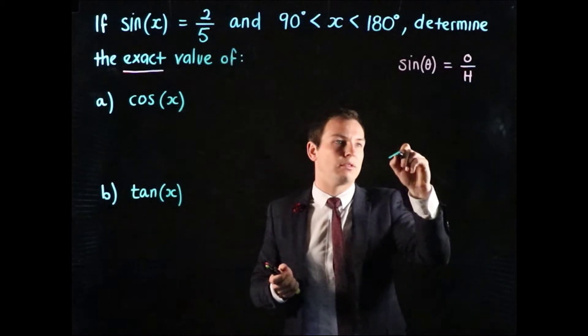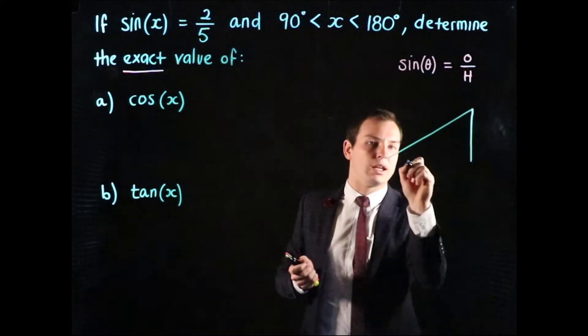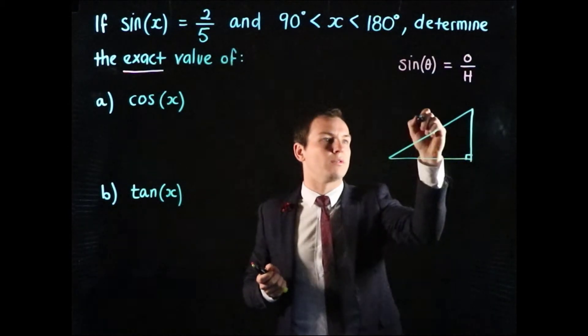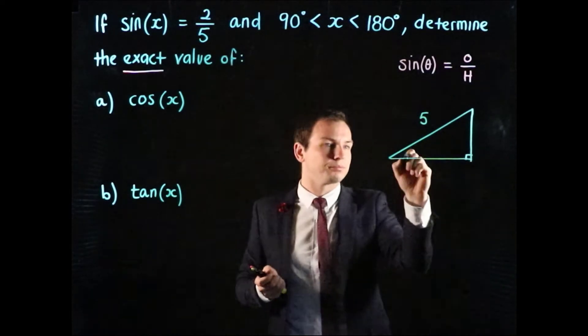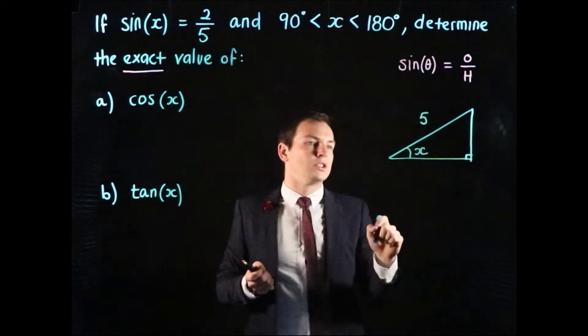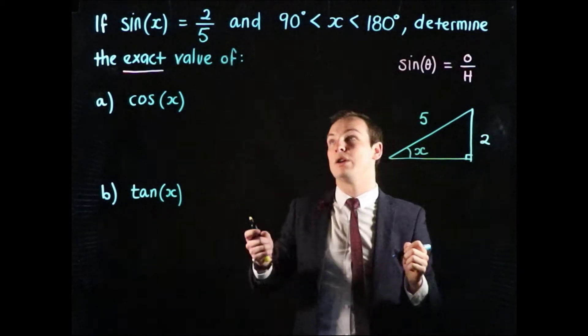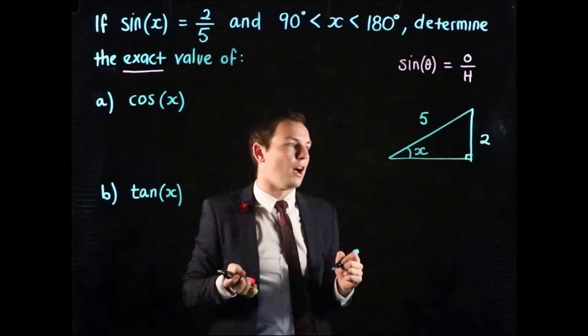We're going to draw a triangle in and this hypotenuse's value is 5. I'm going to put the angle x degrees just here. So opposite x is going to be a length of 2 because we know that the ratio of sine of x is opposite 2 over hypotenuse of 5.